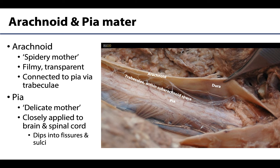The arachnoid and the pia mater are often discussed together. The arachnoid mater loosely translates to 'spidery mother,' named so because of arachnoid trabeculae that extend through the subarachnoid space. These trabeculae are composed of flattened irregularly shaped fibroblasts that bridge the subarachnoid space. The arachnoid is thin but it can be manipulated with forceps — certainly more so than the pia mater. Although closely applied to the meningeal layer of dura mater, the arachnoid is not directly attached to the dura; instead it's held against the inner surface of the dura by the pressure of the cerebrospinal fluid in the subarachnoid space.